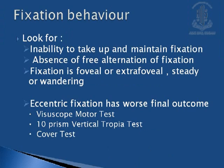Coming to the fixation behavior, whenever we are looking for fixation behavior, we should look for the inability to take up fixation and to maintain it, or if there is an absence of free alteration of fixation, and how the fixation is — whether it is foveal or extra-foveal, steady or wandering. Eccentric fixation has the worst outcome and can be tested by direct ophthalmoscope, 10-prism diopter vertical prism test, or cover test.